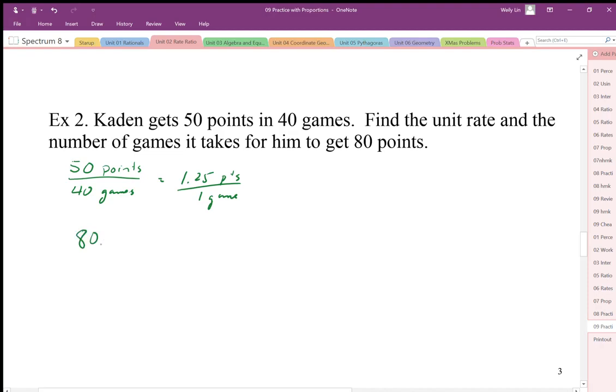I'm going to start with my 80 points, and I'm going to use my times strategy. I need to get my points on the denominator, that way my units cancel out, and one game in the numerator.